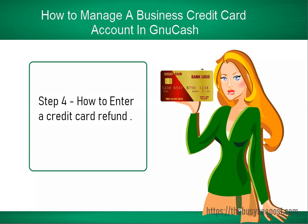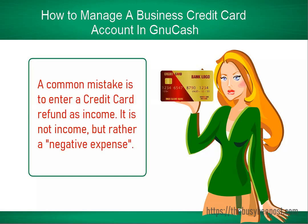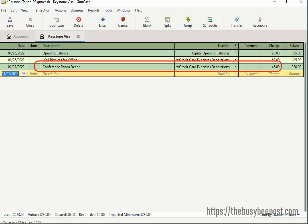In this next step, I will show you how to handle credit card refunds. When you return something you purchased with a credit card back to the store, the store will issue a refund back to your credit card account. A common mistake is to enter a credit card refund into GNU Cash as income — it is not income, but rather a negative expense. For example, I added a second charge of $45 for some more decorations, but later decided to return them.